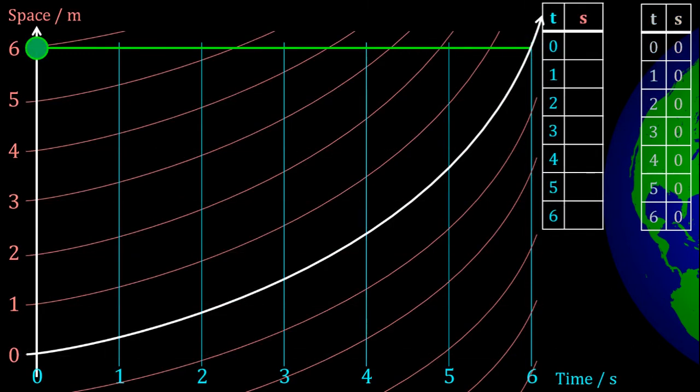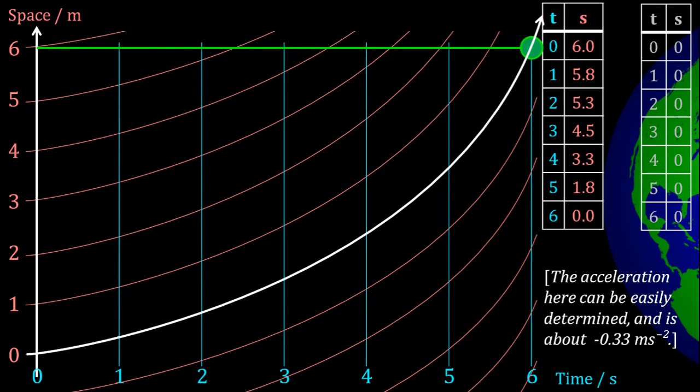As before, the object follows the same straight line, but if we read off the displacement values, they are changing. The object is now moving, not just with a constant velocity, but it's accelerating towards the planet. This acceleration is what we call gravity.